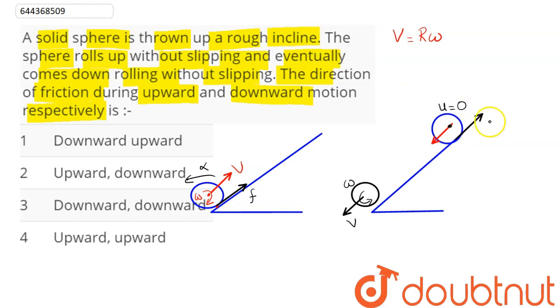So in this case also, the friction must always act in the upward direction. So in both cases, we can say friction acts in upward direction. Hence upward and upward - that is option number four is the correct answer, as the direction of friction during upward and downward motion respectively is upward and upward.